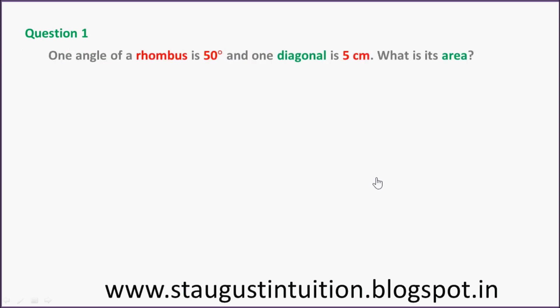Question number 1: One angle of a rhombus is 50 degrees and one diagonal is 5 cm. What is its area?